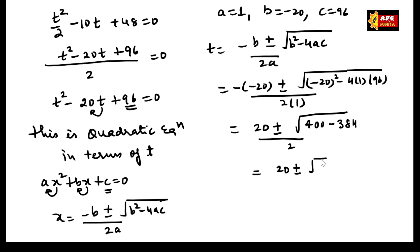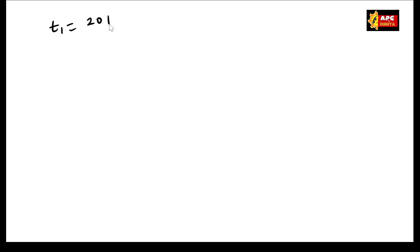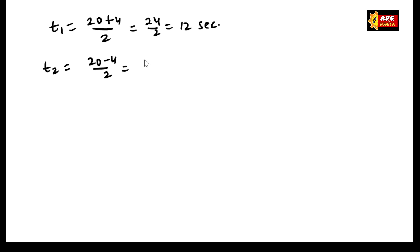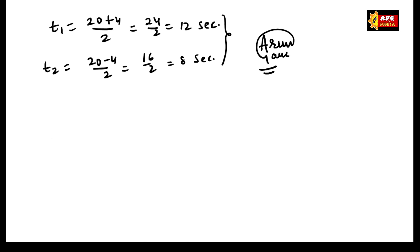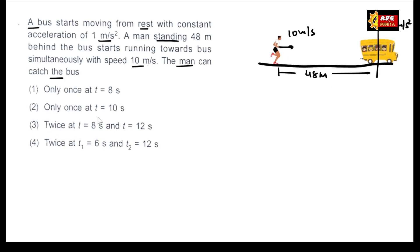√16 = 4, so t = (20 ± 4) / 2. Taking the plus sign: t = 24/2 = 12 seconds. Taking the minus sign: t = 16/2 = 8 seconds. Both values are valid — the man can catch the bus at t = 8 seconds and again at t = 12 seconds. So this is the correct answer.